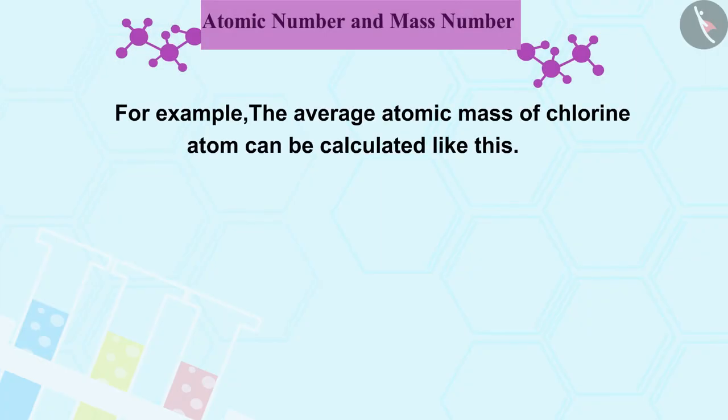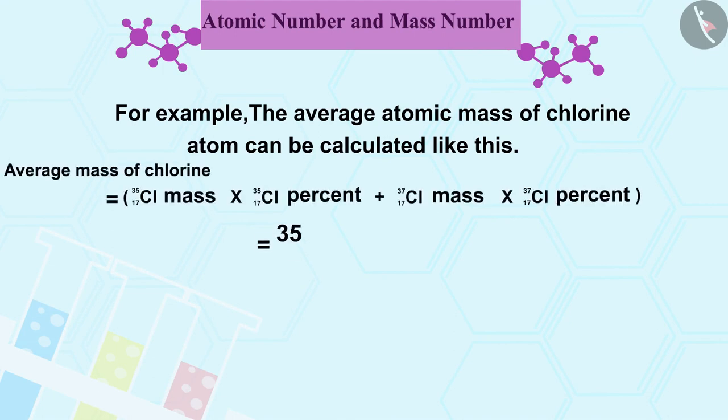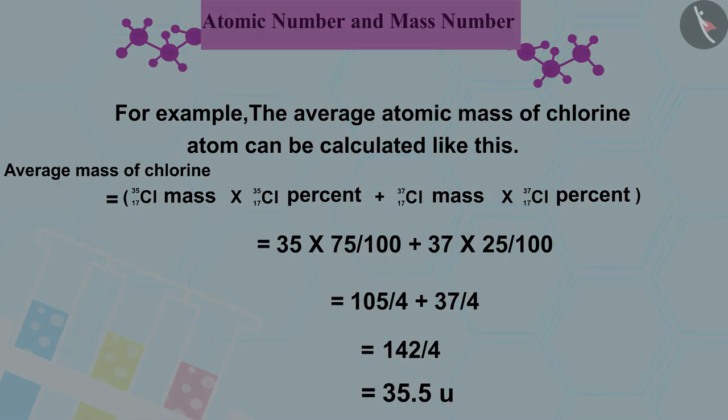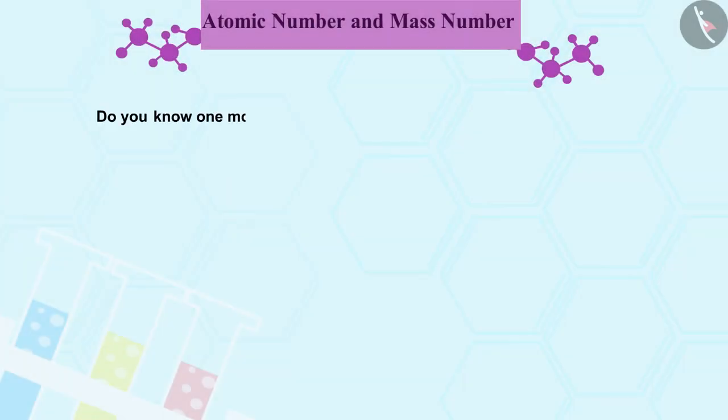For example, the average atomic mass of chlorine atom can be calculated like this. This means that if we take some quantity, it will have isotopes of chlorine and the average mass will be 35.5. Do you know one more interesting thing?